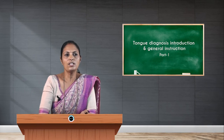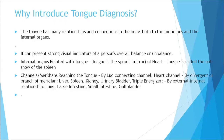The tongue has many relationships and connections to the body through both the meridians and the internal organs, so it can present strong visual indicators of the overall health as well as the balance or imbalance of the person.